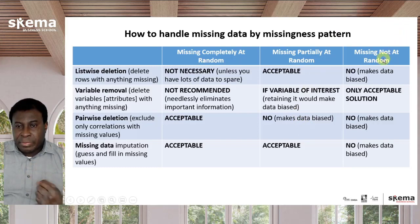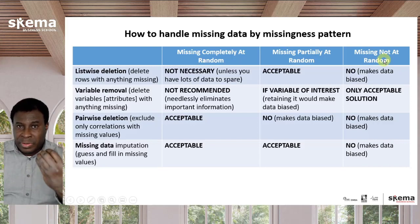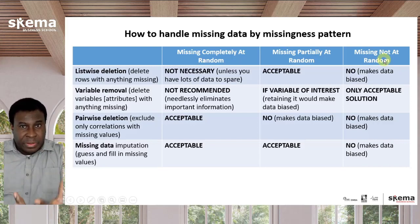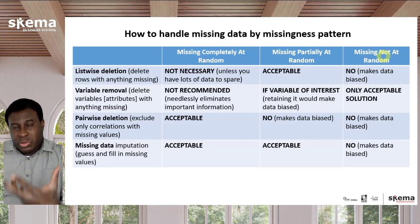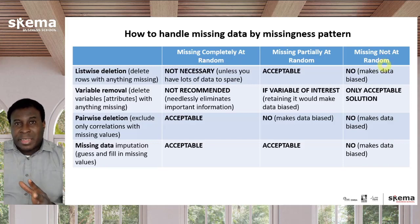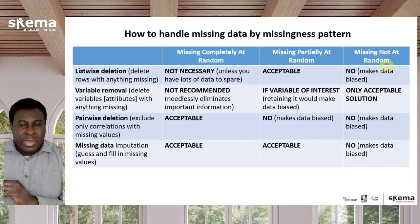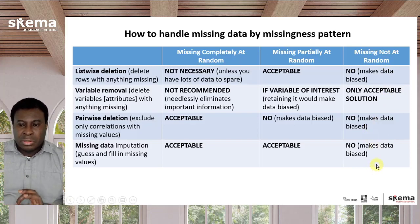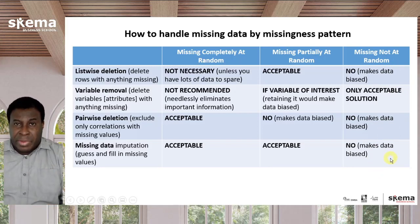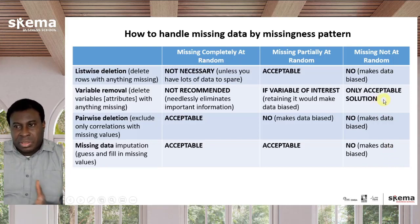The last type of missing pattern is missing not at random — for example, when older people do not reveal their age or people with higher incomes don't reveal their incomes. When the variable itself is biased on itself, you have no choice but to throw away that variable. None of the other solutions is suitable because all other solutions will incorporate and propagate the bias throughout the dataset. That variable is corrupted and unreliable — you have to throw it away.